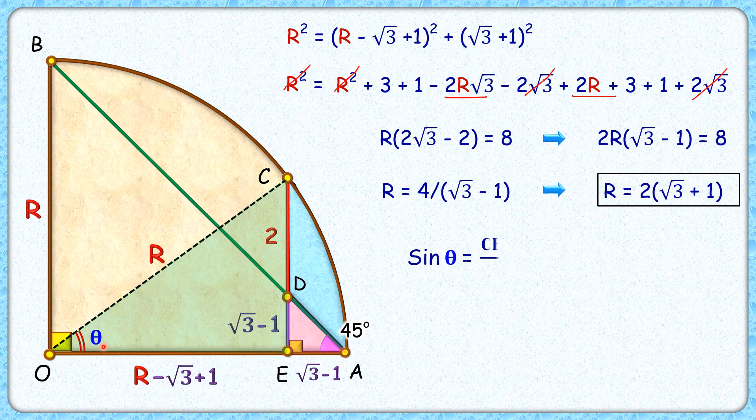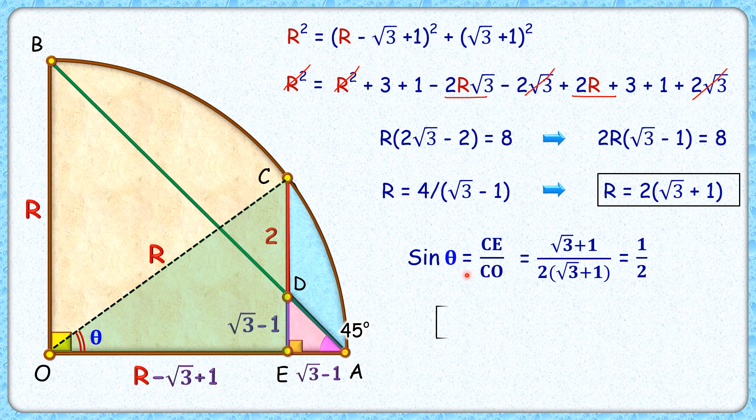We know sine theta is perpendicular upon base, so sine theta is CE upon CO. CE length is 2 plus root 3 minus 1, or root 3 plus 1, and R is 2 times root 3 plus 1. This root 3 plus 1 will get canceled. We'll get sine theta is half, and we know that sine 30 degrees is half, and thus theta is 30 degrees.